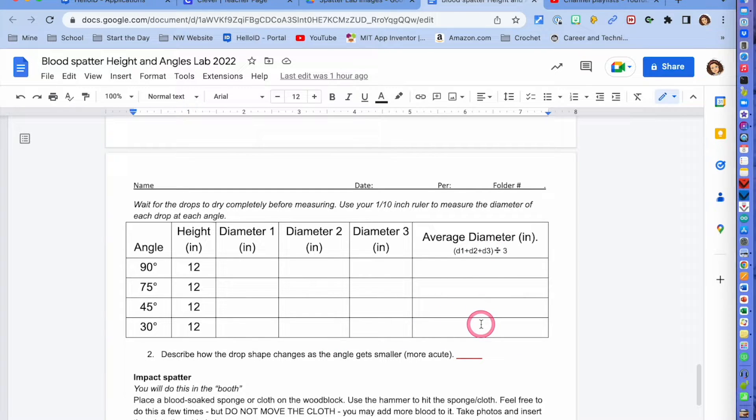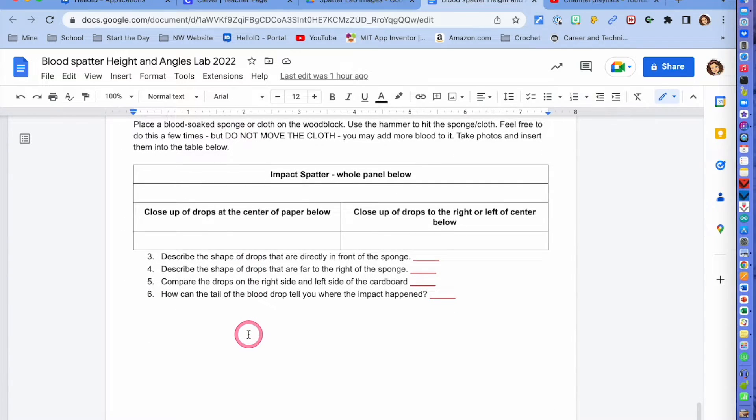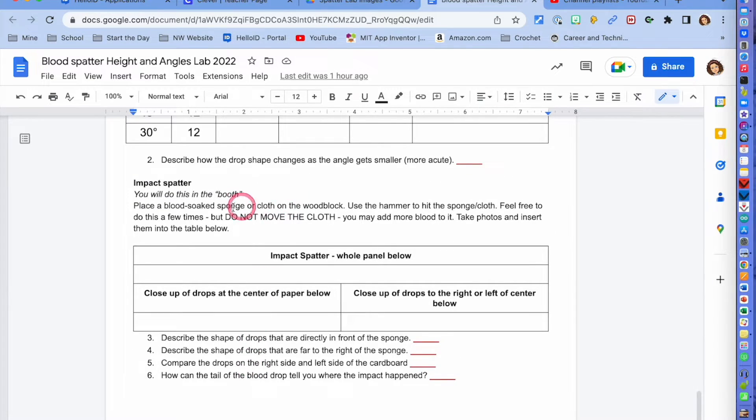And finally we are going to do impact spatter. So what you're going to do is place a cloth on the wooden block that I've provided for you in our little paint booth and you're going to soak it pretty much all the way through with blood and then you are going to smack it with the rubberized mallet and your paper that you put out in front of you should then show the impact spatters.